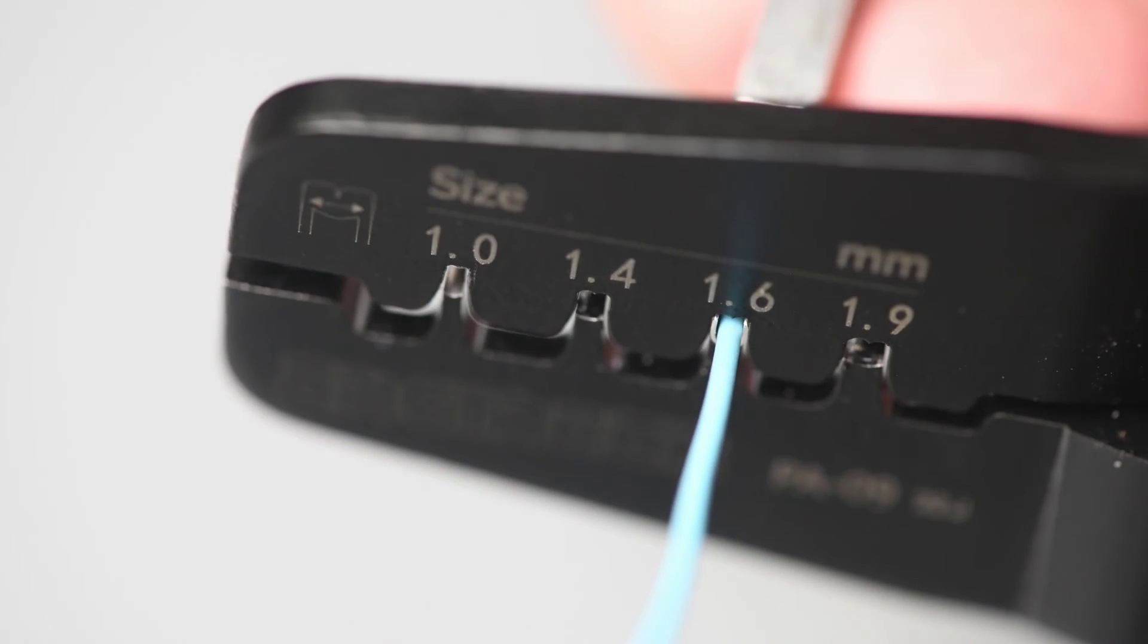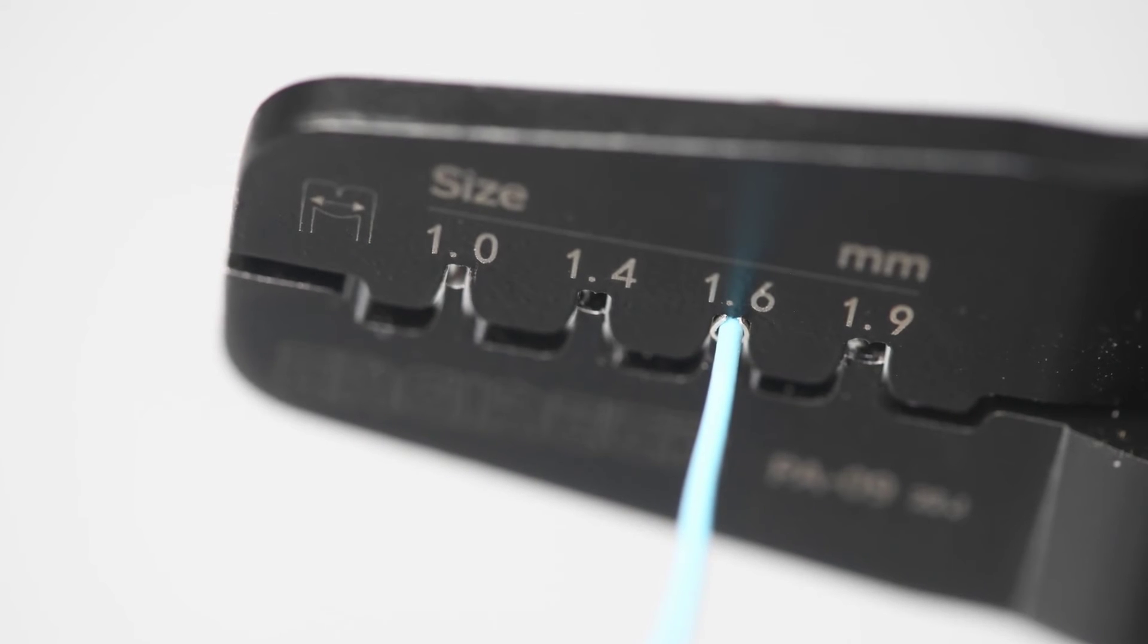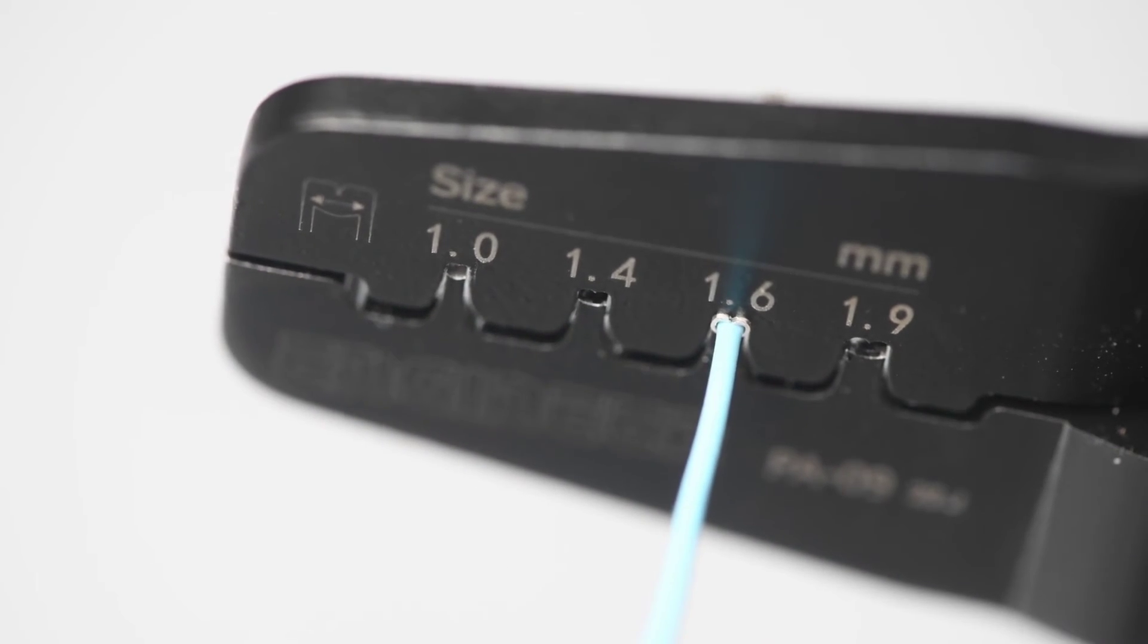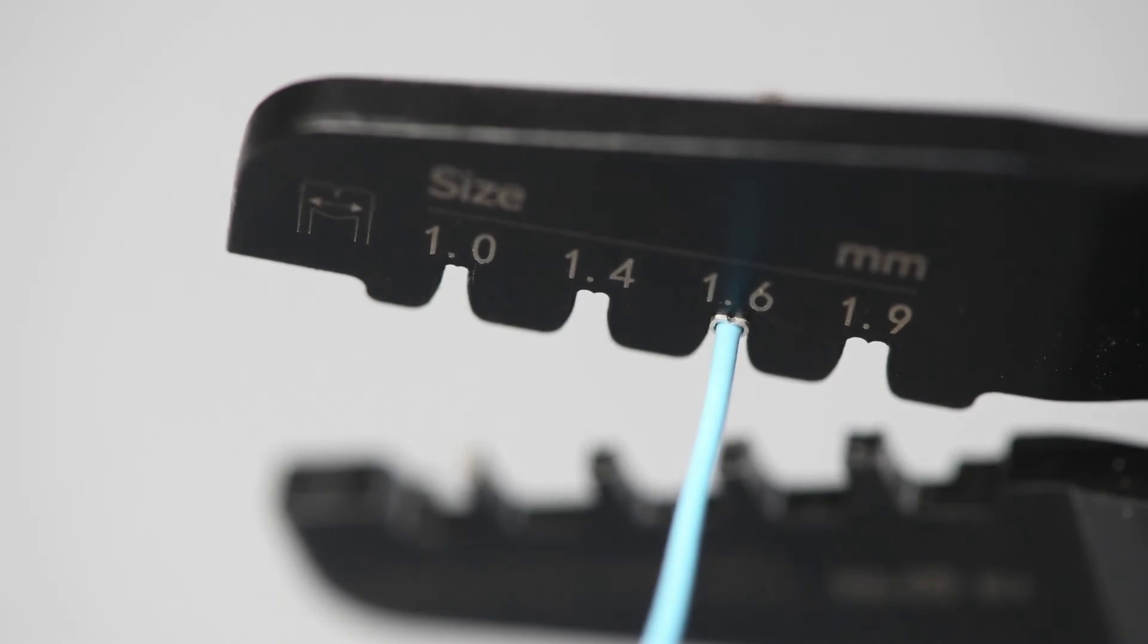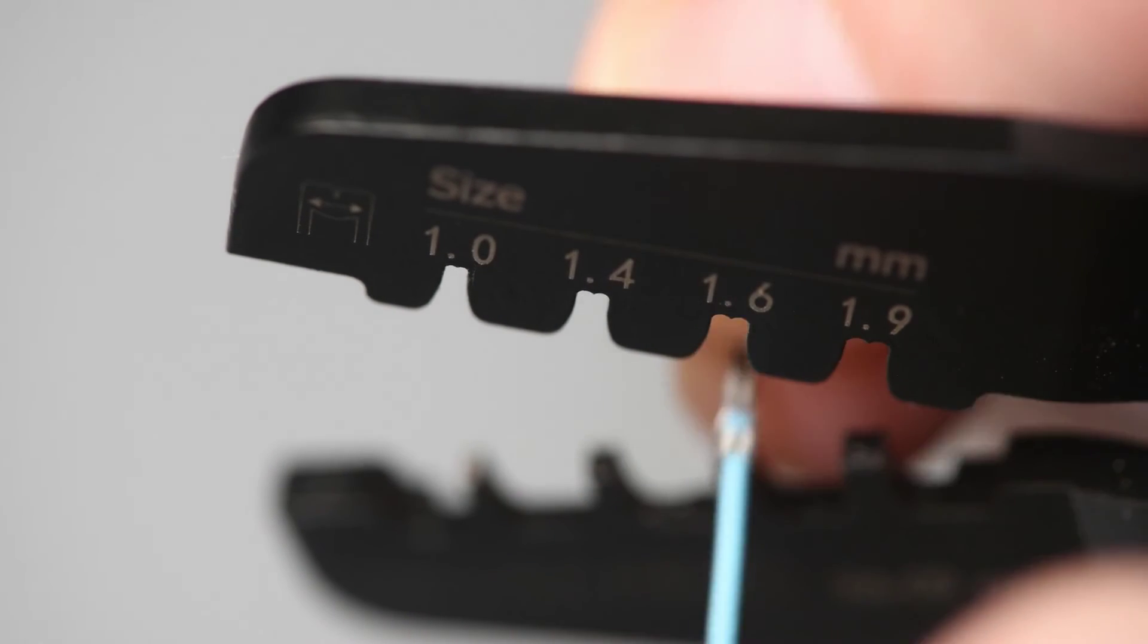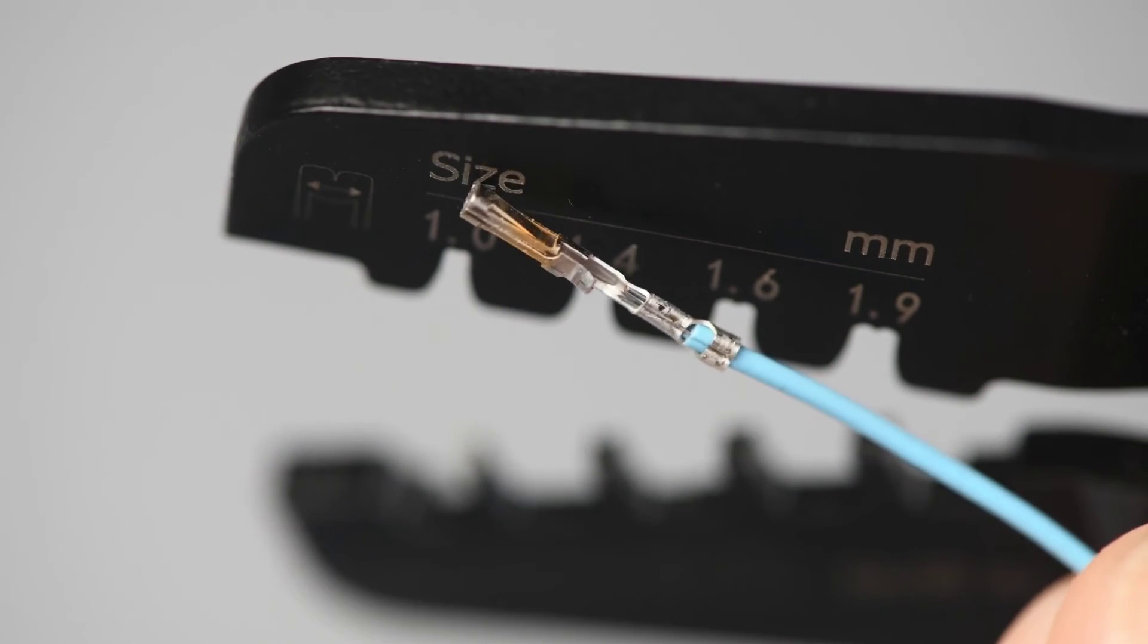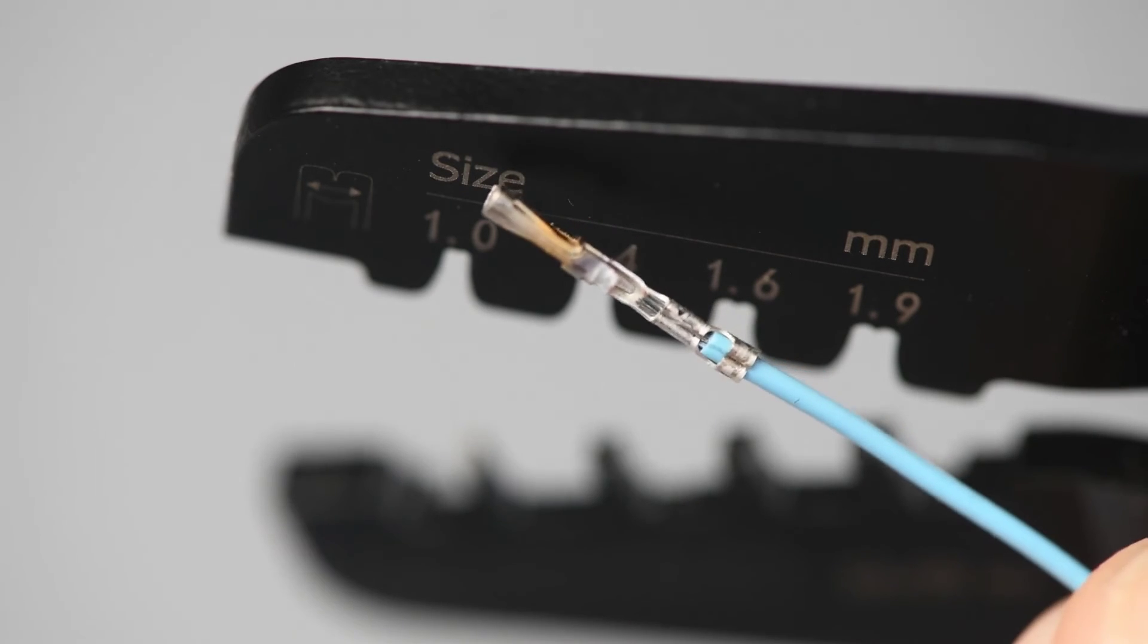I like the idea of a one-step crimp, but in reality it doesn't seem to work out so well for a general purpose crimp tool. Of the, I think, six terminals I use, only the Molex SL terminals work great in the IWS-3220M. Of course, that's the most common terminal I use, so I'm still very happy with the IWS-3220M, especially for the price.